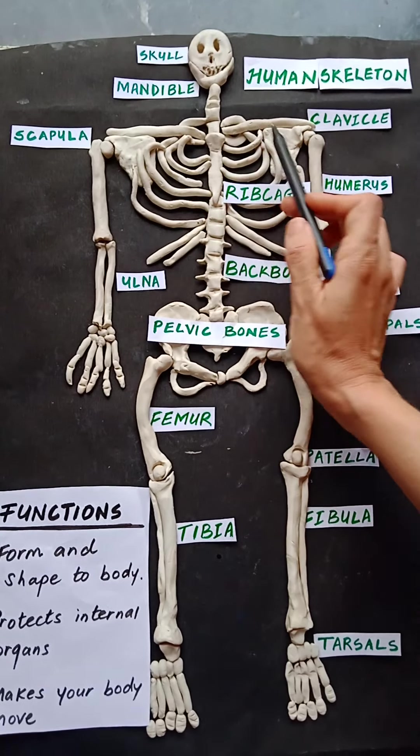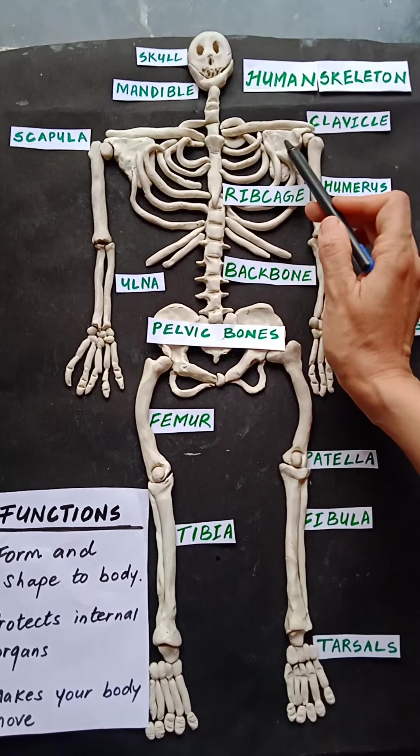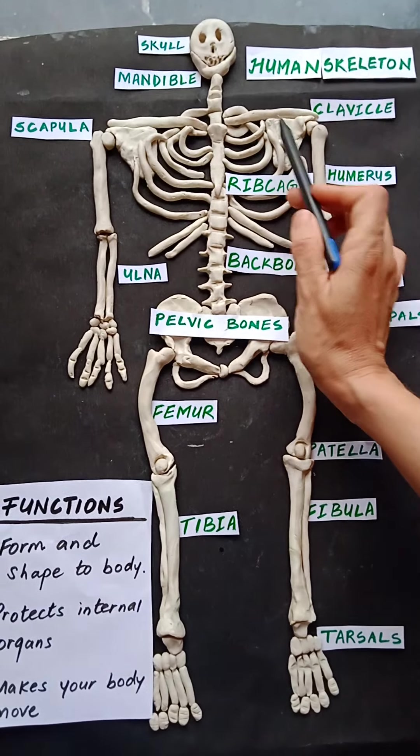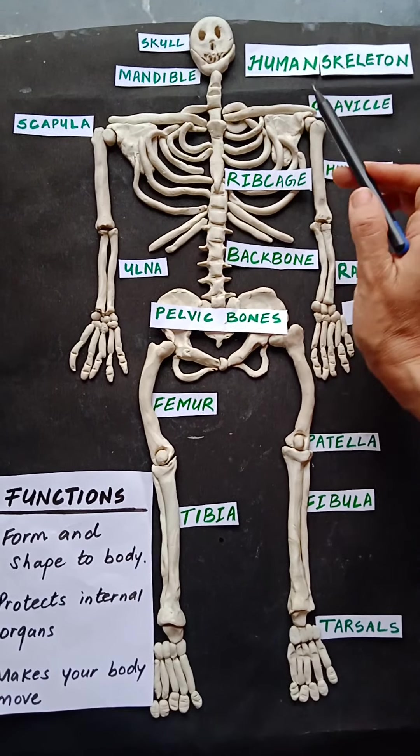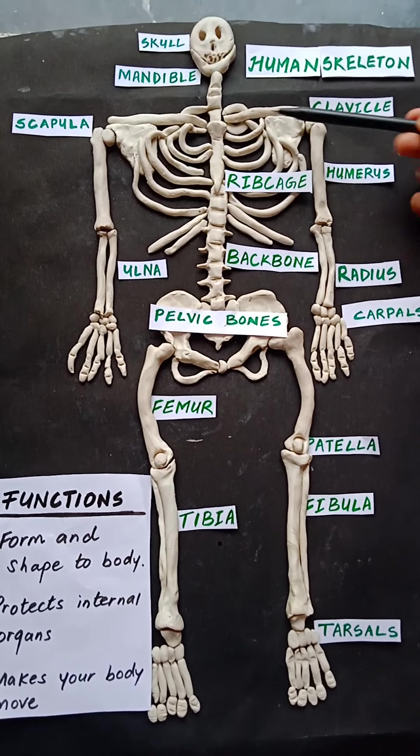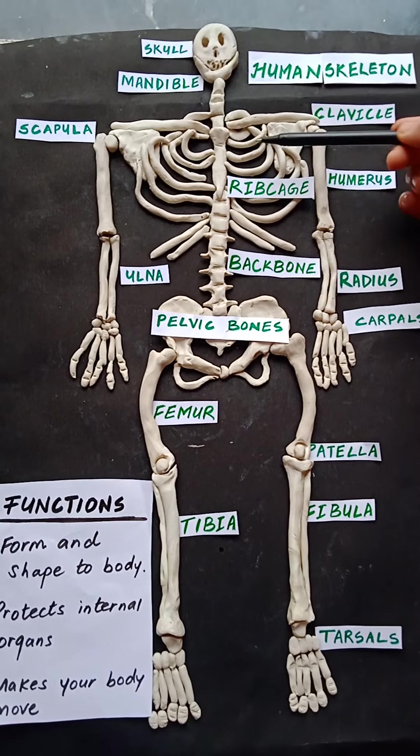These two bones are also called shoulder blades. Now we will move on to the rib cage.